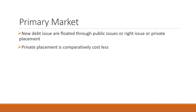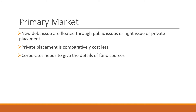Just as in the share market we can issue shares publicly, through private placement, or other ways, similarly in the primary debt market we can issue debt products in different ways. Among these, private placement is comparatively costless, as corporates need to provide details of their fund sources — that is, from where they are getting the funds — and keep a record of those sources.